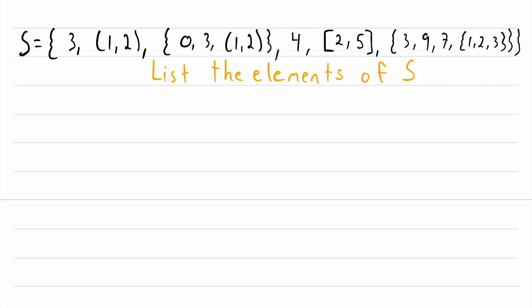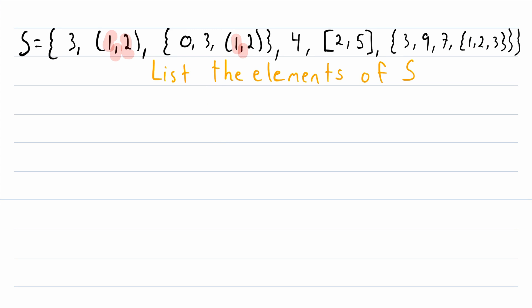But that's a lot trickier this time around. What makes this example more difficult is the fact that there are commas here that are not separating elements of our set. So we can't just look at the commas and easily identify the elements. We have to do a bit more thinking. For example, there's a comma separating a 1 and a 2, but 1 is not an element of set S, and neither is 2.